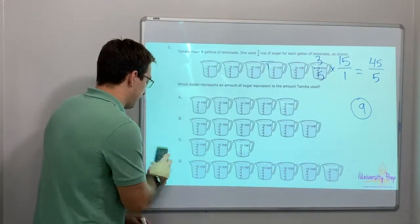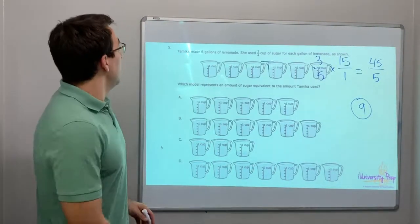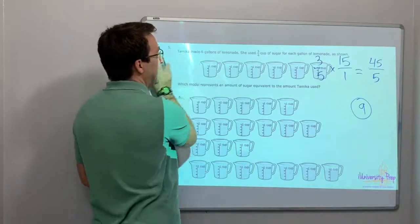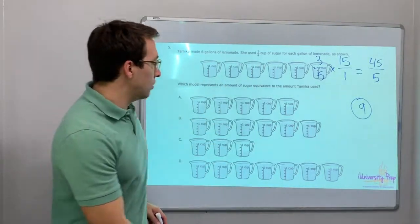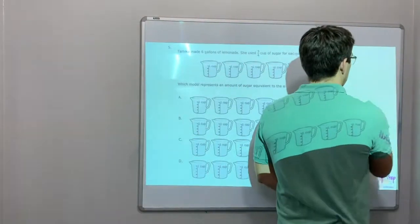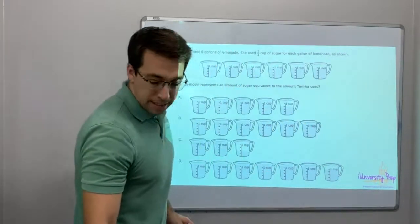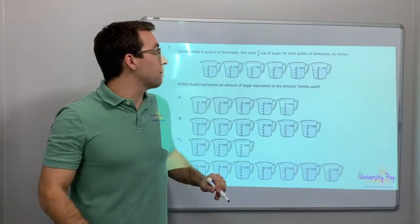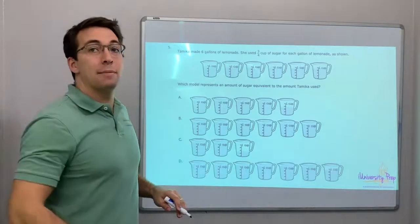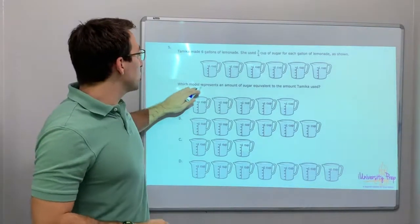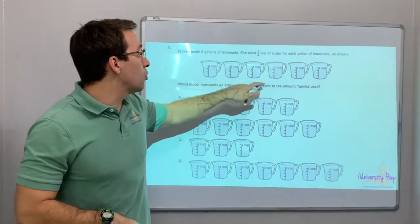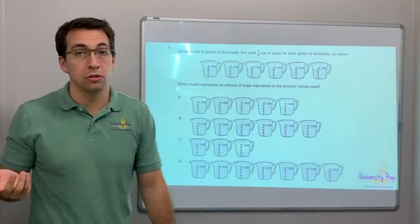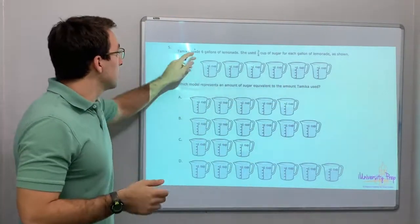Number five. Tamika made six gallons of lemonade. She used three-quarters of a cup for each gallon of lemonade as shown. Which model represents the amount of sugar equivalent to the amount Tamika used? So let's do this.